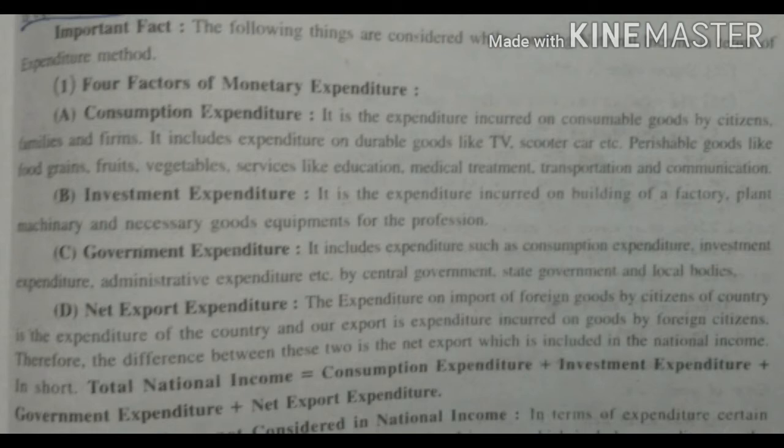The first component is consumption expenditure. The expenditure incurred by citizens, families, and firms on consumable goods is called consumption expenditure. This includes expenditure on durable goods like TV, scooter, and car; perishable goods like food grains, fruits, and vegetables; and services like education, medical treatment, transportation, and communication.